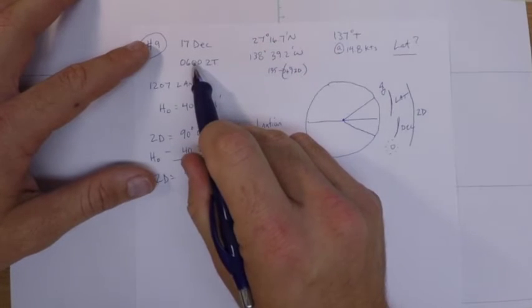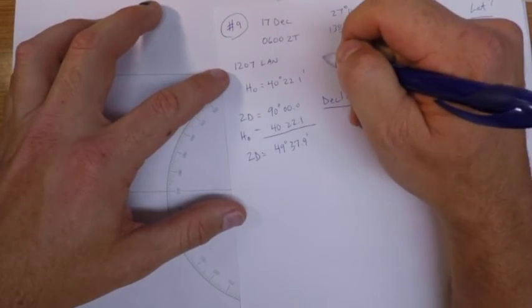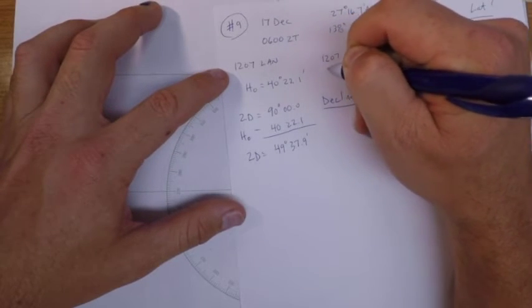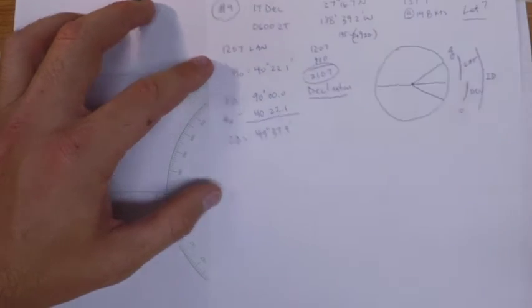So our sighting actually occurred at 1207 plus 9, so our sighting actually occurred much later in the day, 2107. And so that's the time we're going to look for in the nautical almanac.